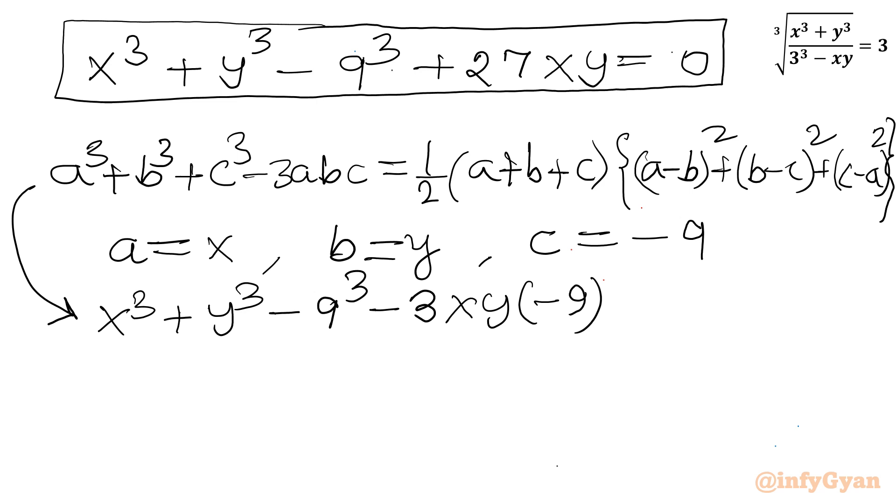Now the turn of RHS half times is x plus y minus 9. In other bracket x minus y whole square plus y plus 9 whole square plus minus 9 minus x whole square. So it will be x plus 9 whole square.